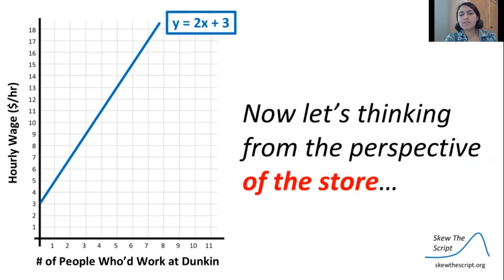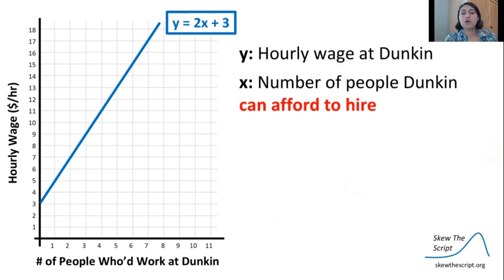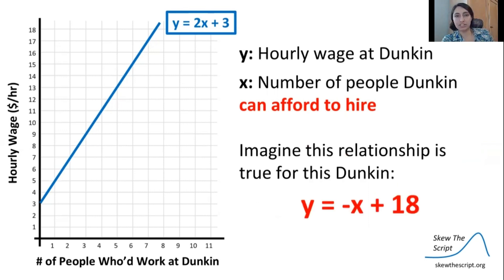Now let's think about it from the perspective of the store. So the blue line is from the perspective of the people who would want to work at Dunkin' Donuts. Now let's look at it from the store's perspective. The y variable is still going to be our hourly wage, but now our x variable is going to be the number of people that Dunkin' Donuts can afford to hire — not how many people want to work there, but how many people they are going to be able to hire. So let's imagine this relationship: y equals negative x plus 18. So the wage equals negative the number of people who Dunkin' can afford to hire plus 18. We can go ahead and plot that line on our graph.